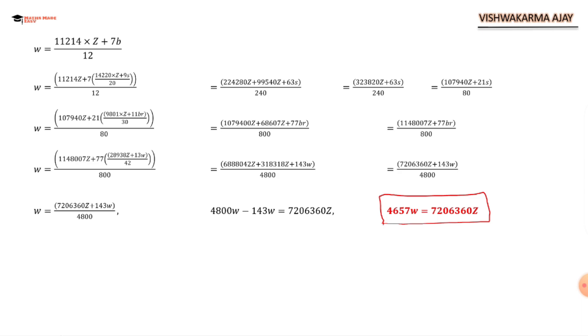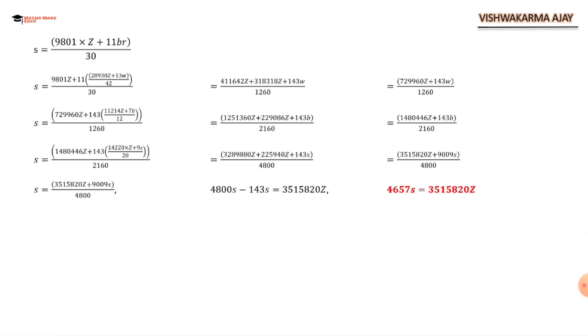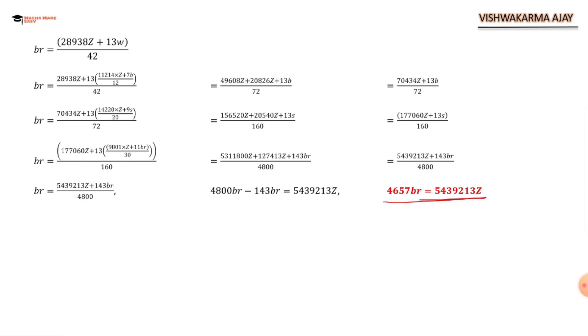The final result — you can pause and check the calculation — is: 4657 × w = 7,206,360 × Z. Similarly, I derive equations for small b (black cow), small s (spotted cow), and small br (brown cow).